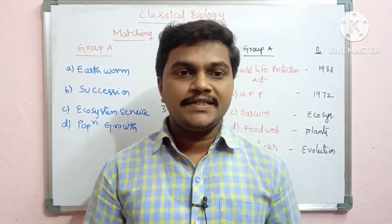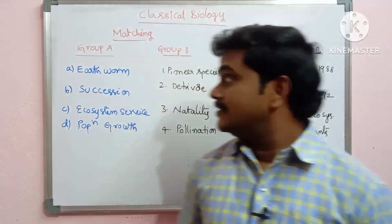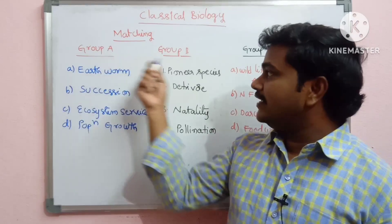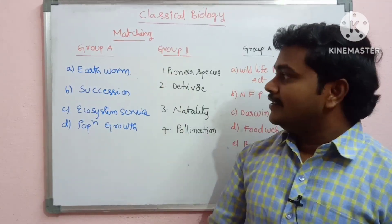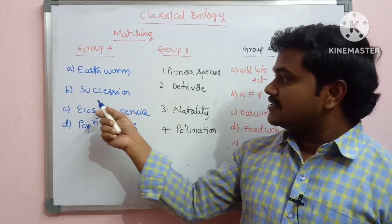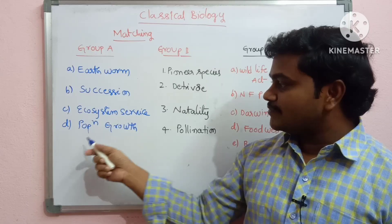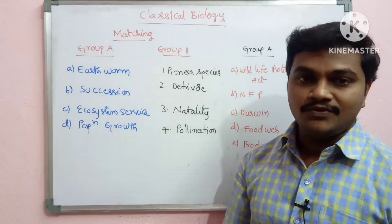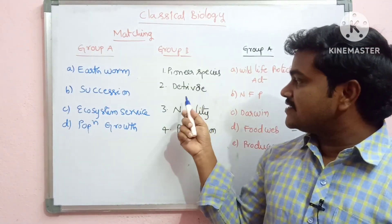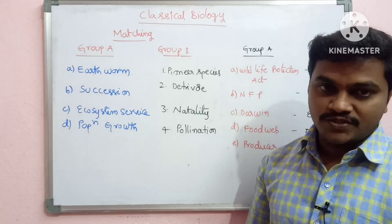So we will have Classical Biology and Matchings. We are matching Group A and Group B. The terms include: Succession, Eco-System Service, Population Growth, Final Species Retriever, Natality, and Pollination.